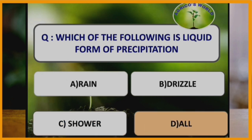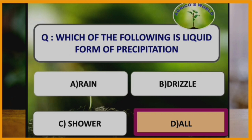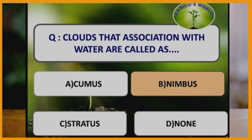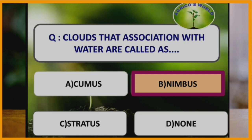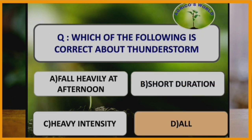The liquid forms of precipitation are rain, drizzle, and shower. Clouds associated with water are called nimbus clouds. Regarding thunderstorms: thunderstorms fall heavily in the afternoon, have short duration, and have heavy intensity.